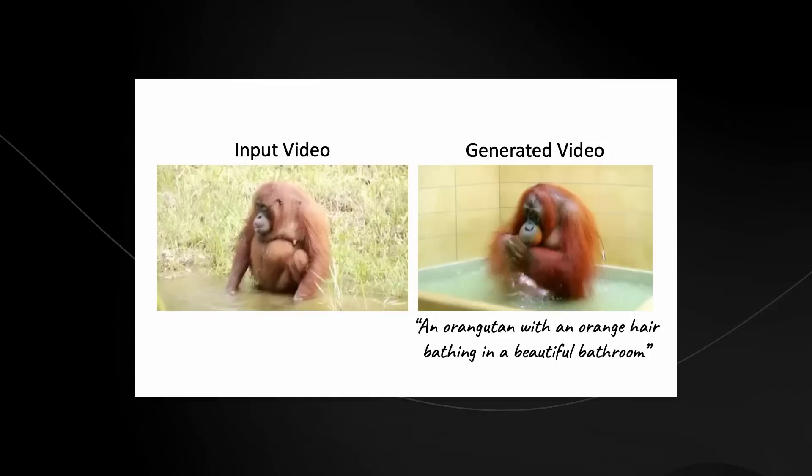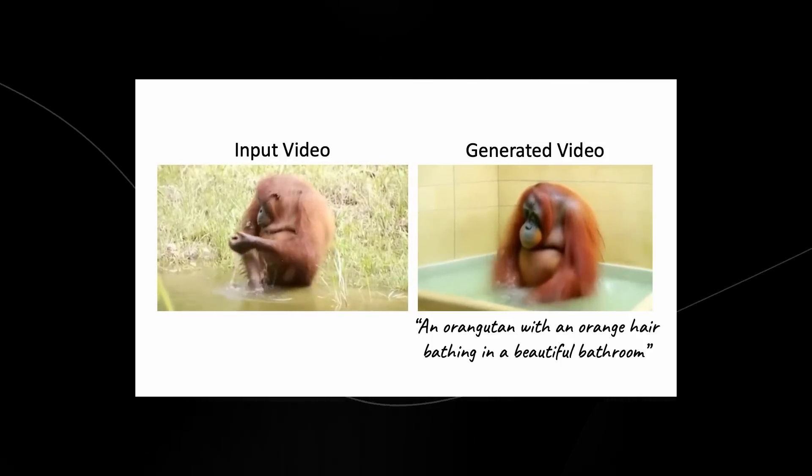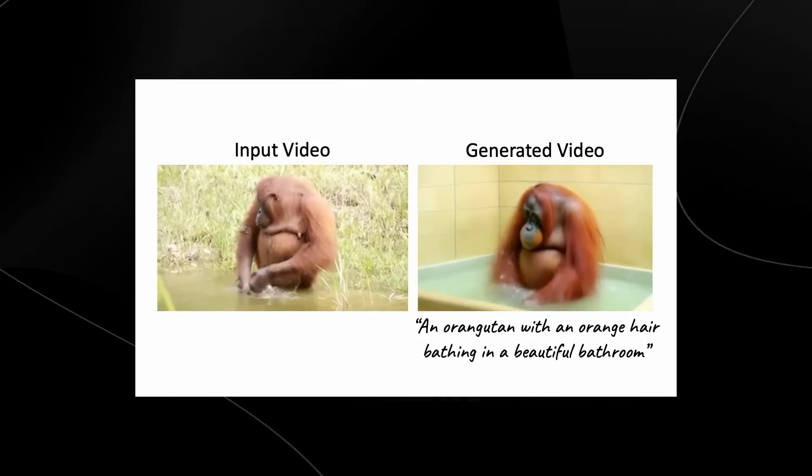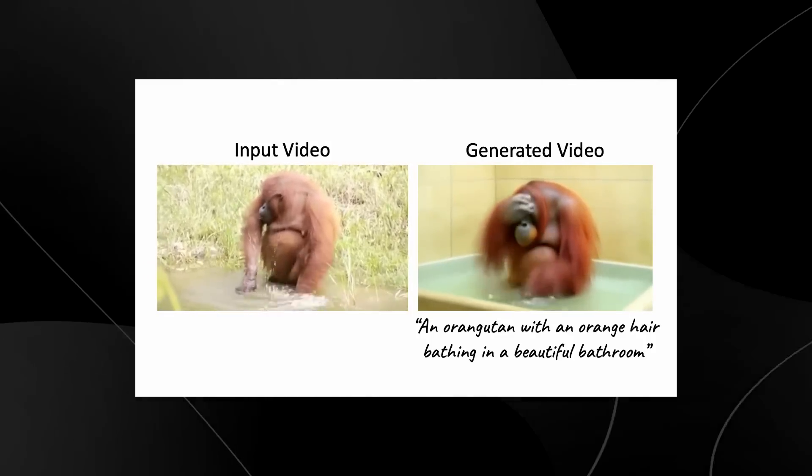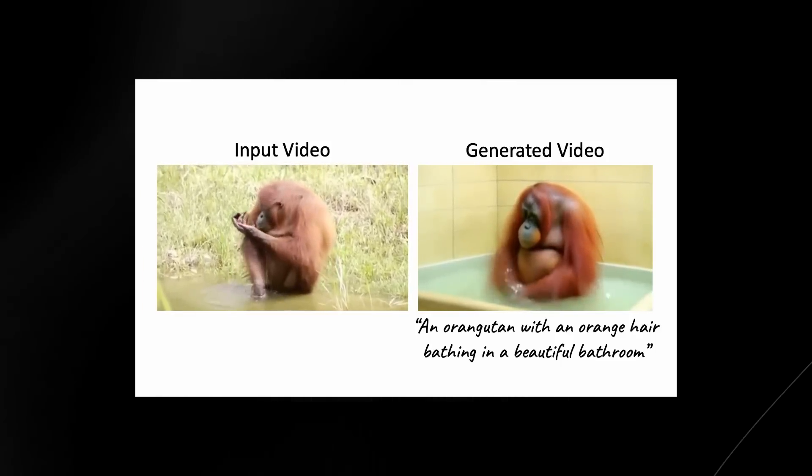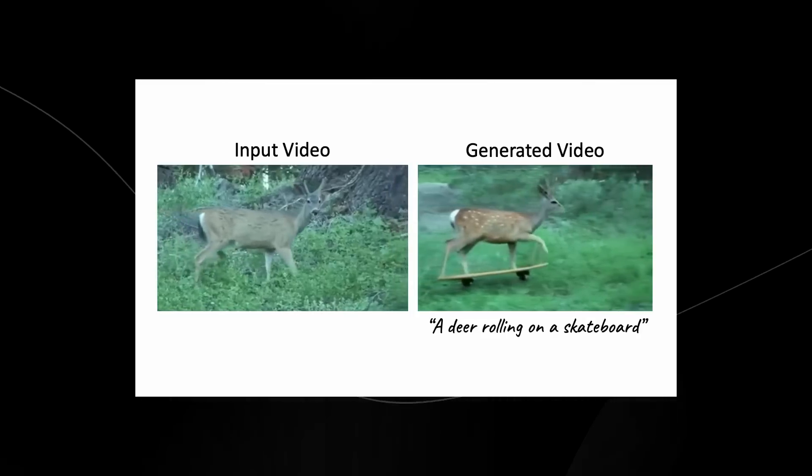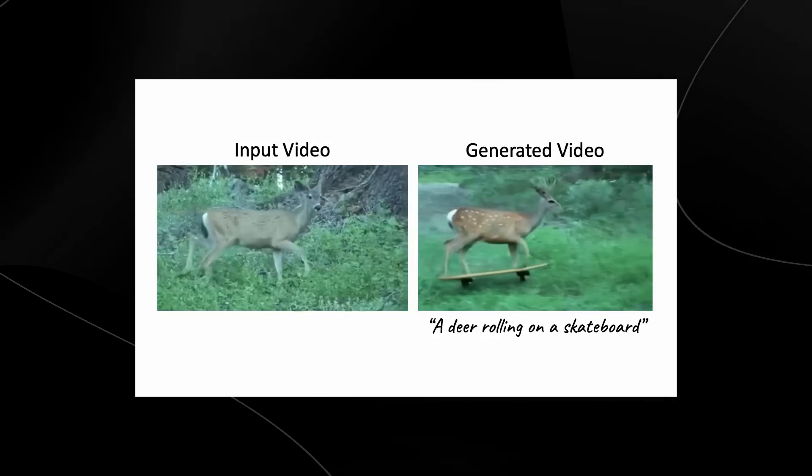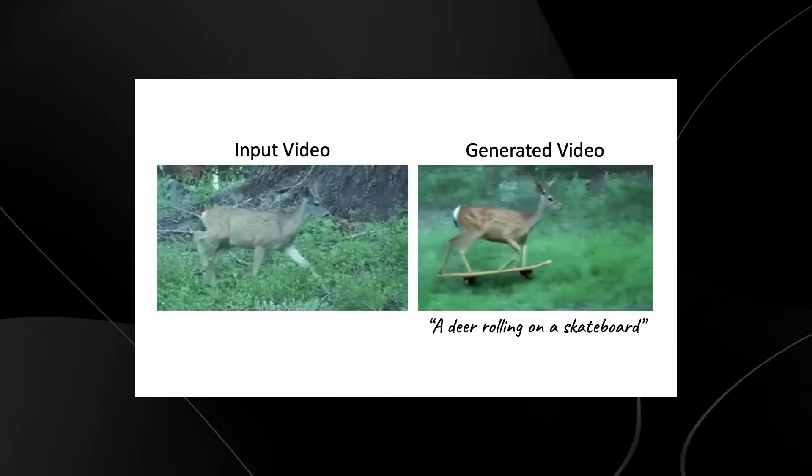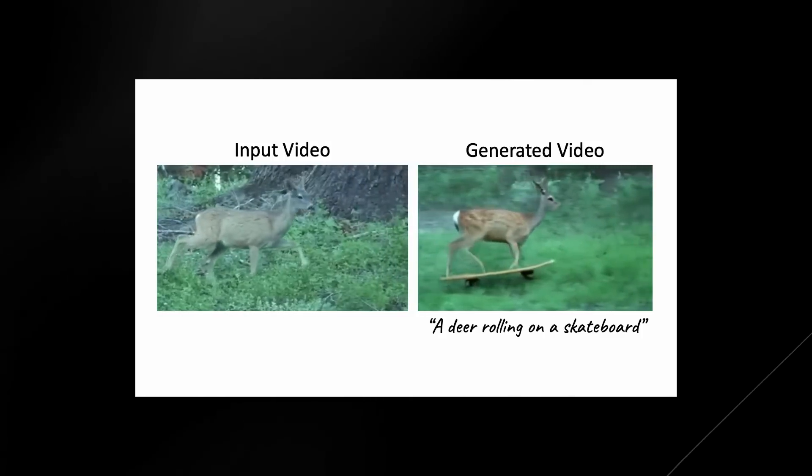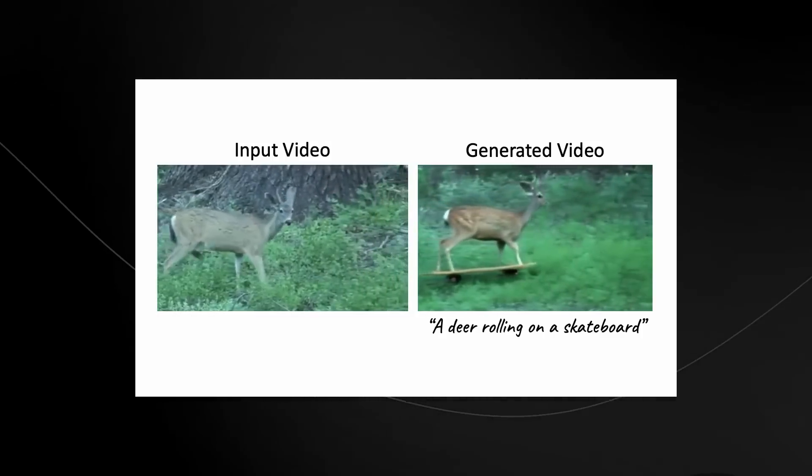Some of them may have some small artifacts, but you have to remember this is new software. Now you can see right here, this one even manages to do the water reflections really, really well. We can see that orangutan with orange hair bathing in a beautiful bathroom does look pretty realistic as to what I would expect if I saw an orangutan bathing. You can also see right here a deer rolling on a skateboard. This one isn't as accurate, but it's still very interesting to see how the models kind of put certain pieces together and how the final output is.